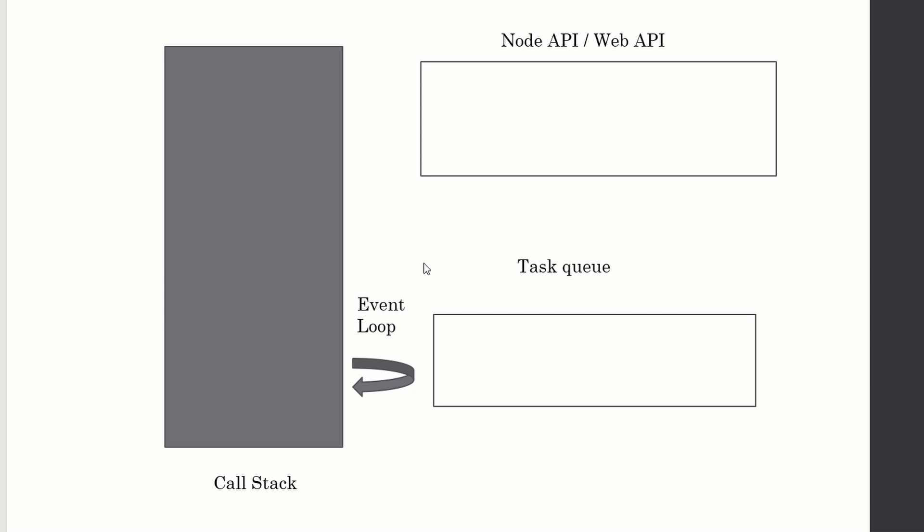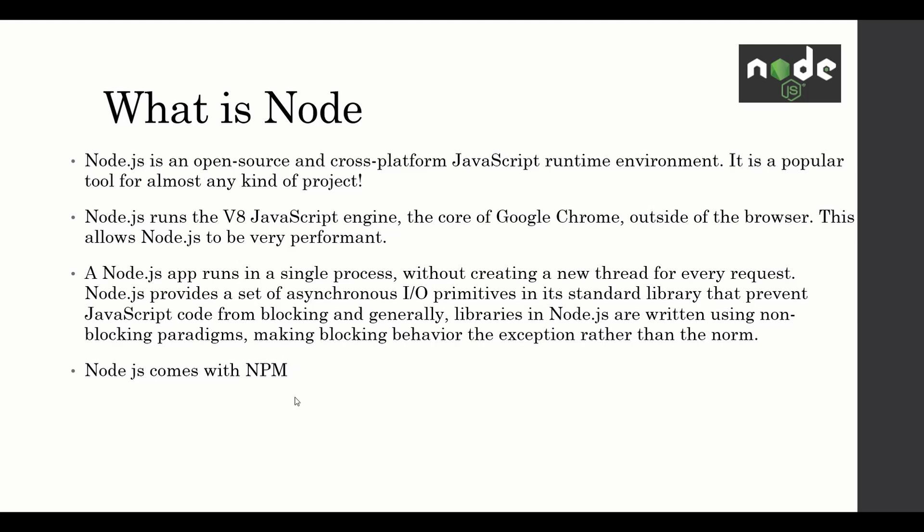That's a basic explanation of how asynchronous JavaScript works — check that linked video for a better explanation. So, what is npm? When you install Node.js, it also installs npm — the Node Package Manager. In npm there are millions of packages that developers have created: third-party libraries we can use in our own projects. npm maintains project dependencies in a package.json file.